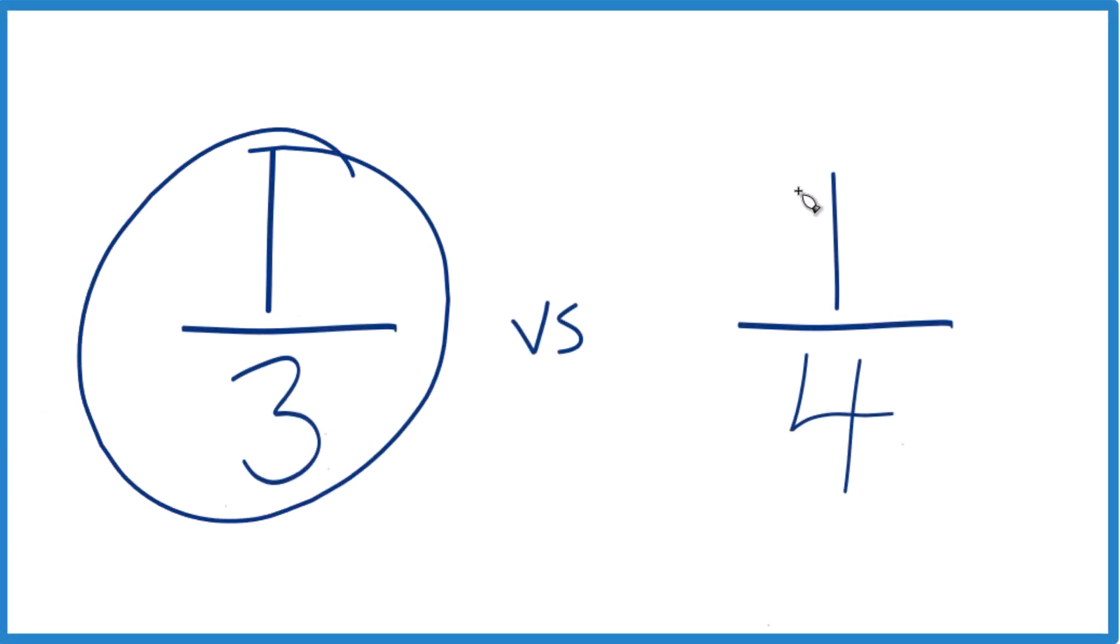Let's compare one-third of a cup to one-fourth of a cup, which is bigger. And the short answer, one-third of a cup is a little bit bigger than one-fourth of a cup. Here's how you figure it out.